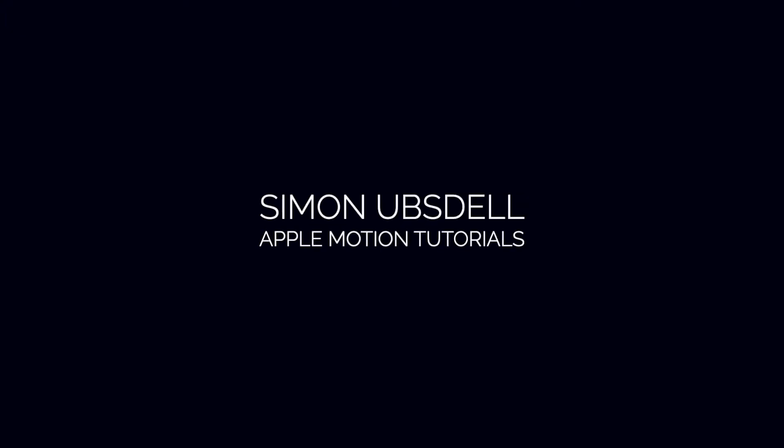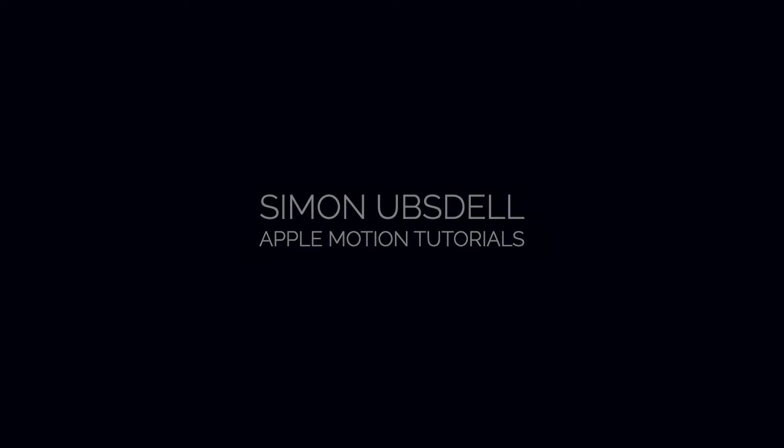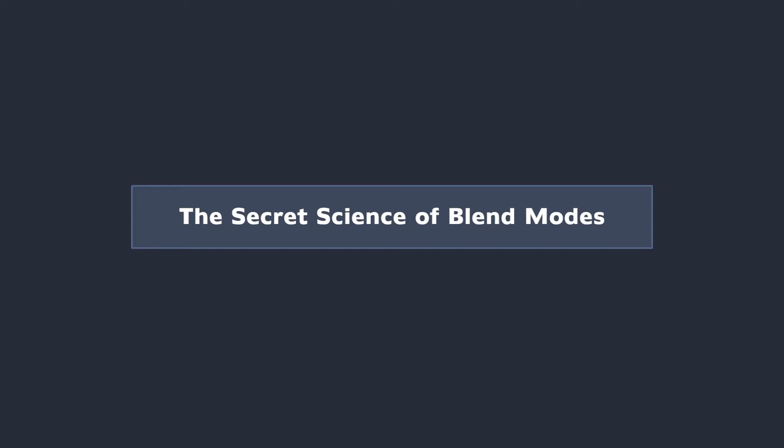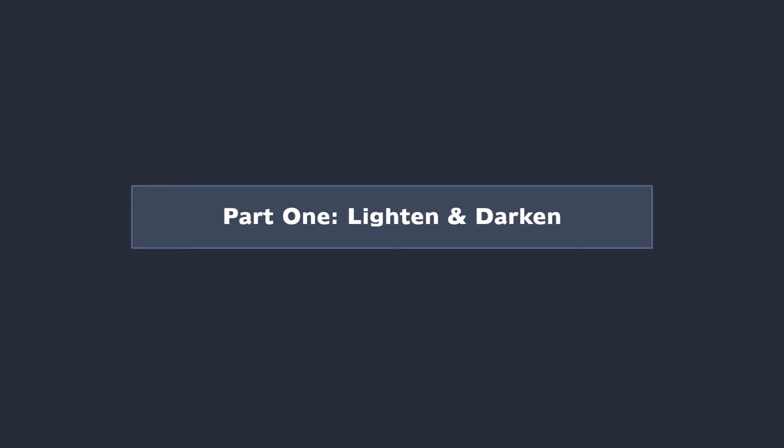Hi, this is Simon Obstel and welcome to another tutorial for Apple Motion. This is going to be hopefully the first of a series of tutorials that will look in detail at the numbers behind blend modes. Now, there are plenty of tutorials out there about blend modes, but mostly they simply show you what blend modes do. What I'm aiming to show you here is why they do what they do, and once you understand that, I hope you'll be able to use them far more intelligently and less randomly. So let's make a start by looking at two basic blend modes: lighten and darken.